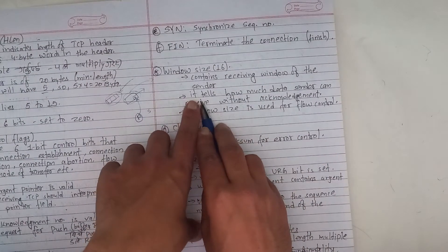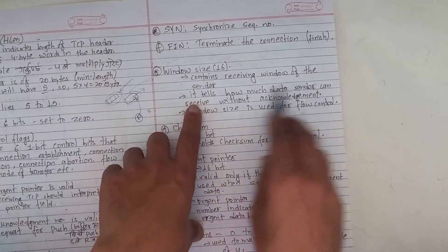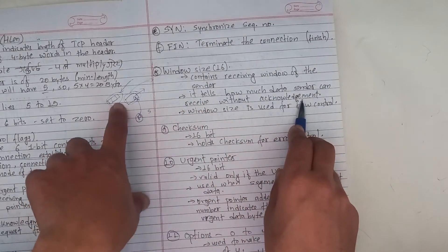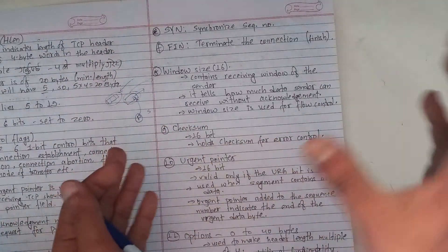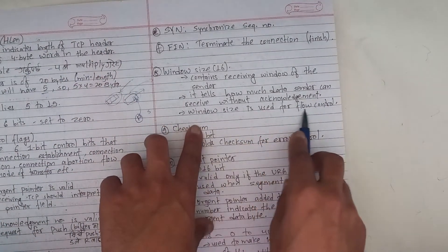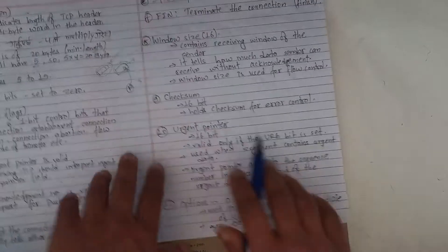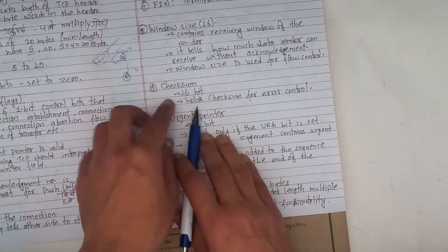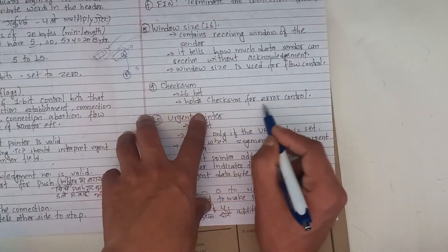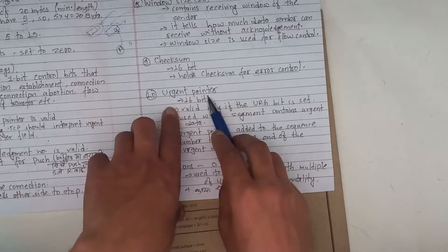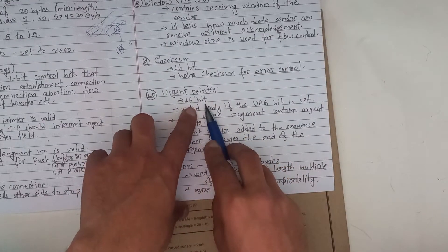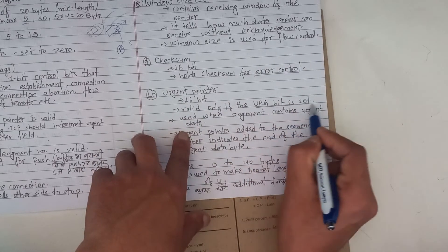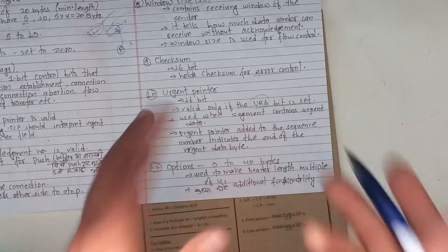The window size tells how much data the sender can send without receiving an acknowledgement. Window size is used for flow control. The checksum field is used for error control. The urgent pointer is 16 bits and is only valid if the URG bit is set.